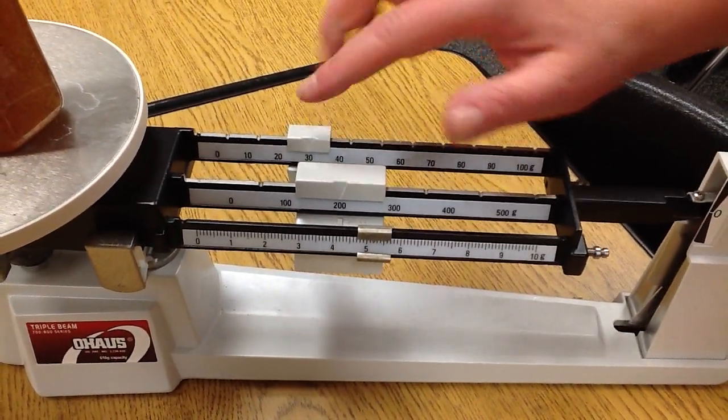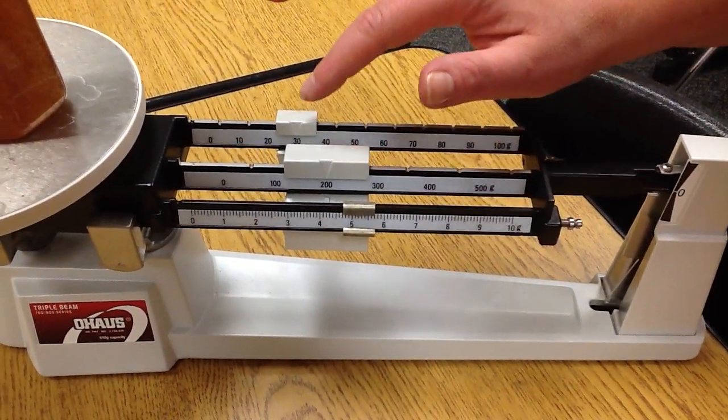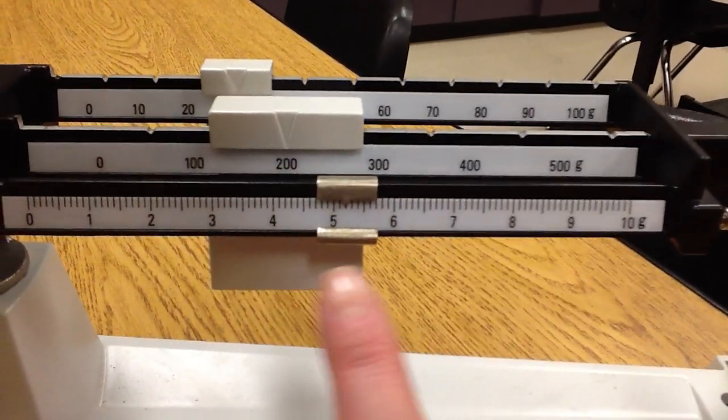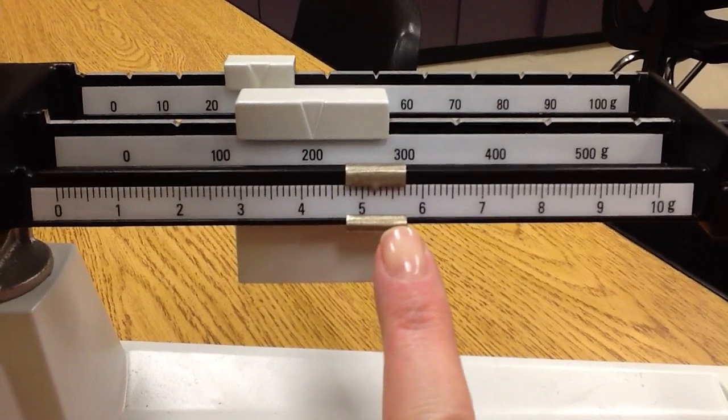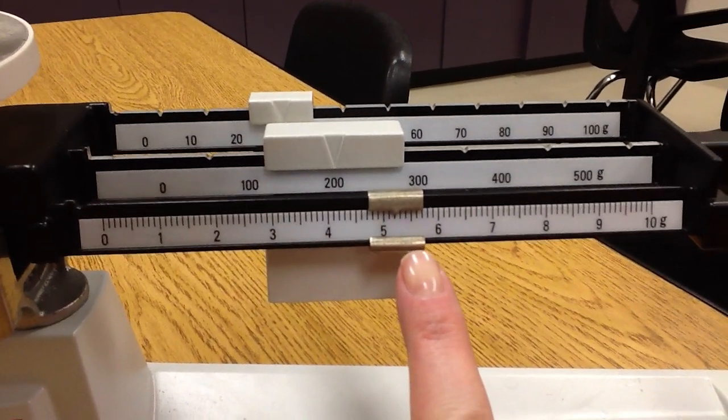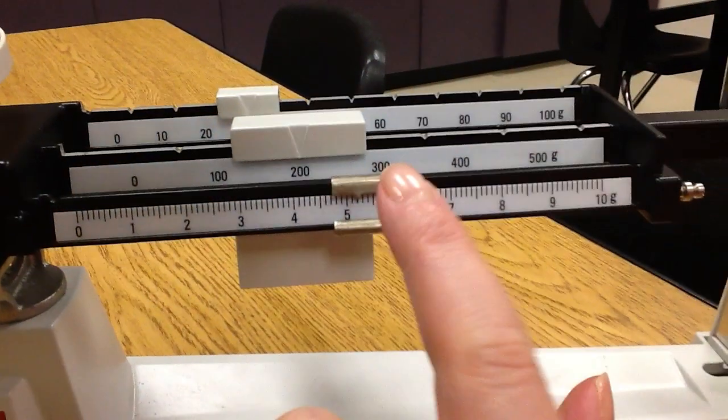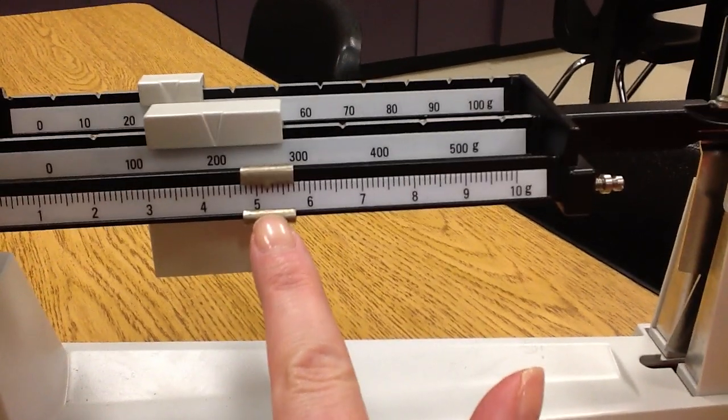We're going to say 230, so you're going to add these together, and plus our ones. 235, and we're going to use our decimal. 235, and it looks like, is it in the middle? I can't tell. 235.2. And that is what we would write. 235.2 grams, because we're measuring mass.